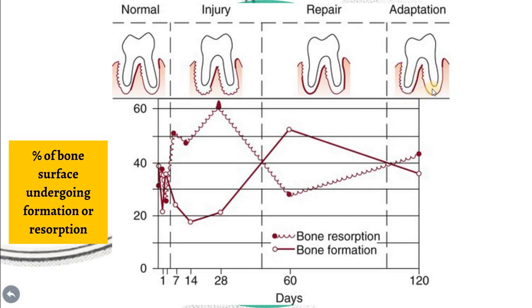If there is good periodontal support, even with excessive occlusal force, the periodontium will try to accommodate and adapt to that force, eventually reaching a state as stable as the normal one.